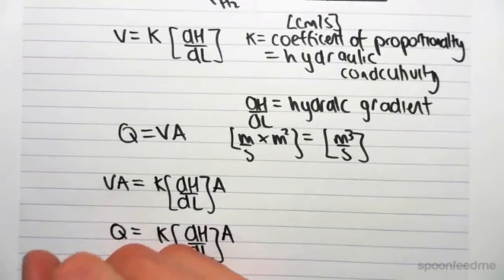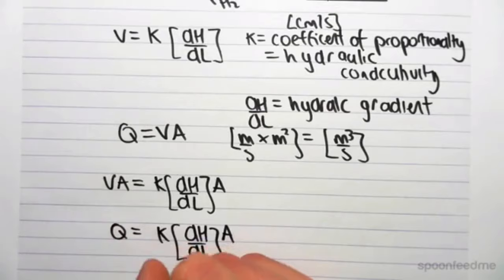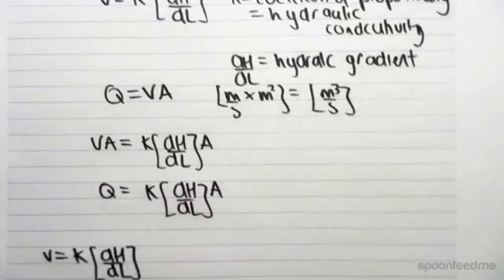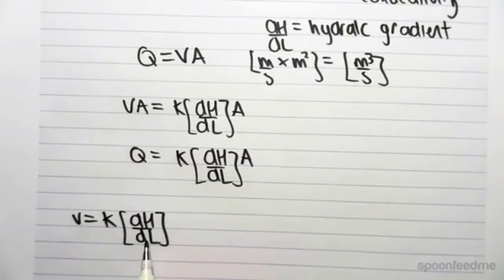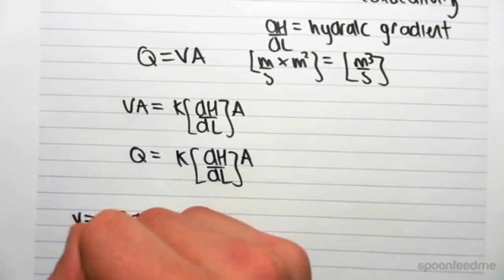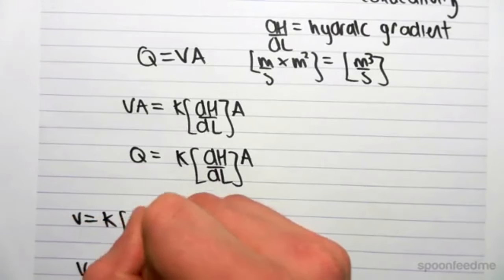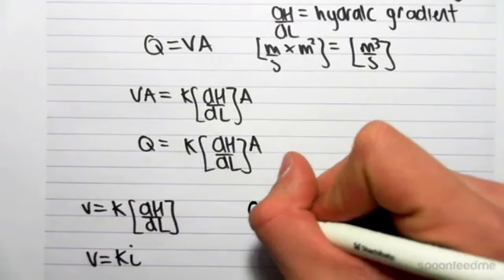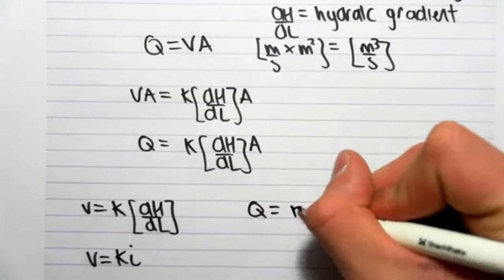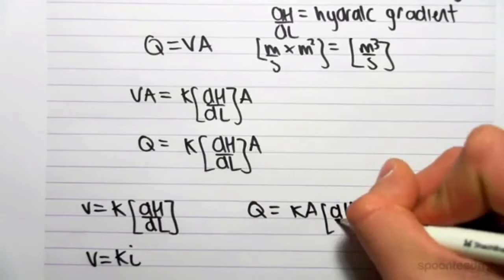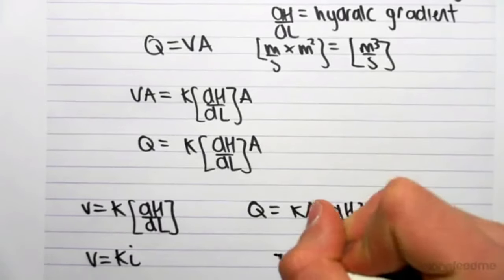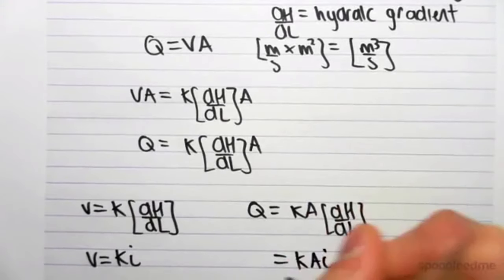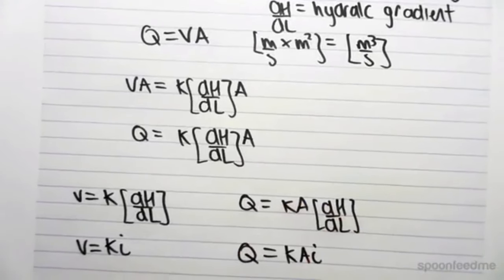Just another side note, we can also rewrite this. Say V equals K times DH over DL. What's often abbreviated is DH over DL as I, so we can write this as V equals KI, where I is just the hydraulic gradient. Similarly, Q equals KAI, where I is just the hydraulic gradient.